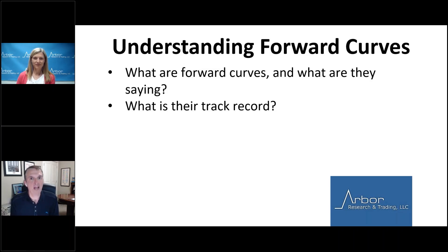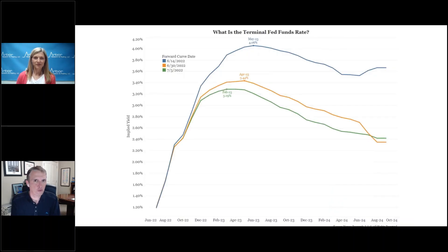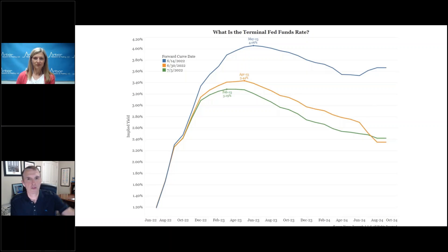A lot of people look at the forward rate curves as an expression from the market of what they think about the future of interest rates. The Fed fund futures is a form of the forward rate curve in a simpler format — it tells you where the market anticipates the Fed funds will be monthly over the next couple of years. This is derived from the forward rate curve and is easily arbitraged to it. People talk about overnight index swaps, the euro-dollar futures curve, or the Fed fund futures curve as predicting where the Fed is going to be — they all should say exactly the same thing because they're easily arbitraged among each other.